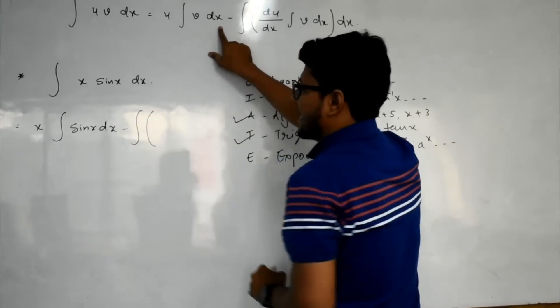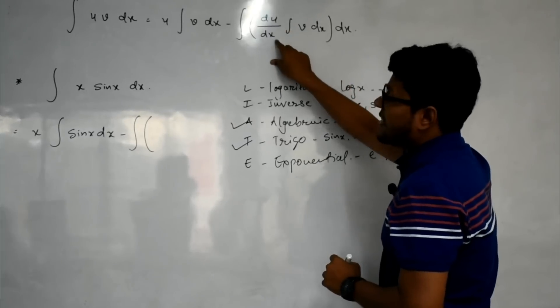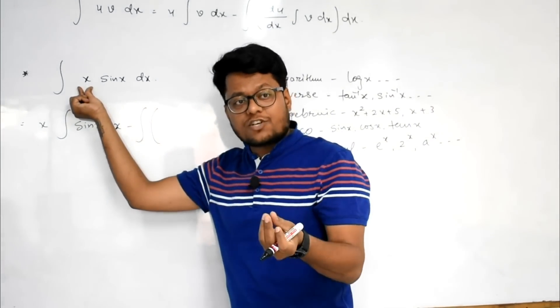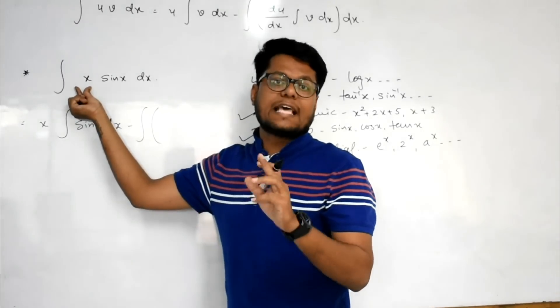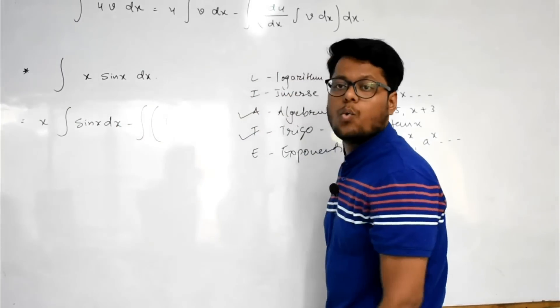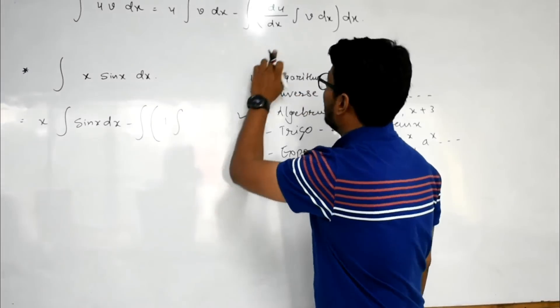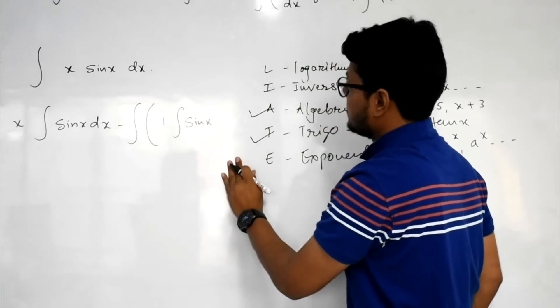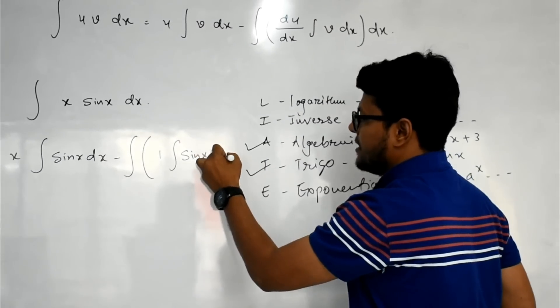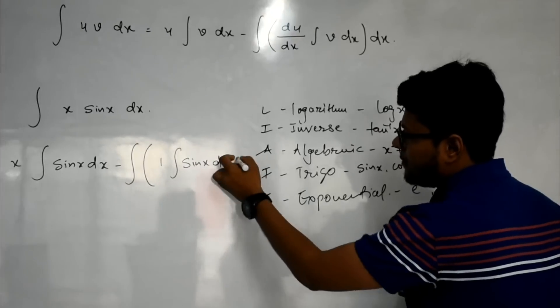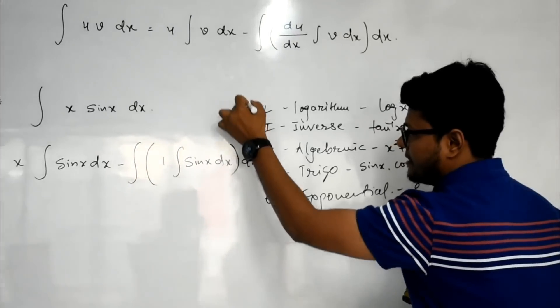Minus integration, then bracket is there, then du by dx. Du by dx means the derivative of u. Here u is x, so we can derivative x. So x has a derivative 1. And then integration of v, so v is our sin x, then dx is there. And whole bracket and dx is there.